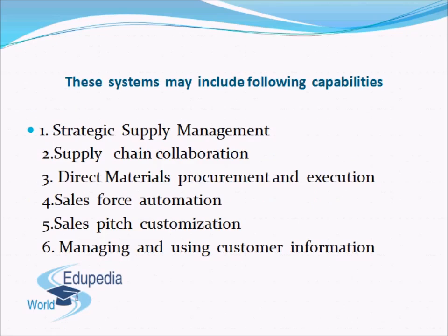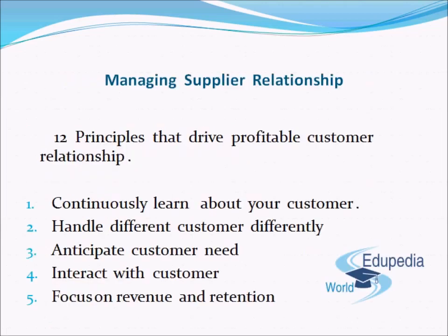We will look at the various capabilities to be included in a supply chain relationship build-up. These are: number one, strategic supply chain management; number two, supply chain collaboration; number three, direct material procurement and execution; number four, sales force automation; number five, sales pitch customization; and number six, managing and using customer information.